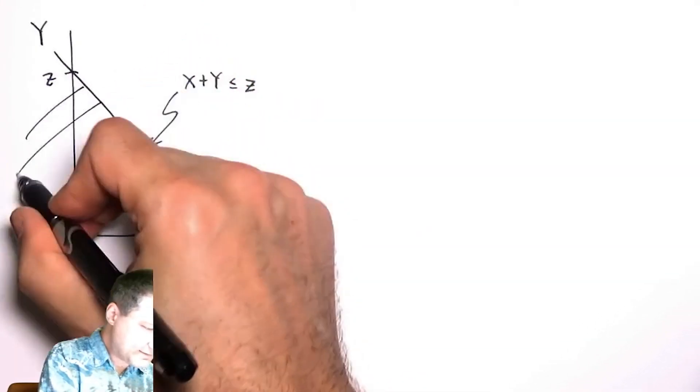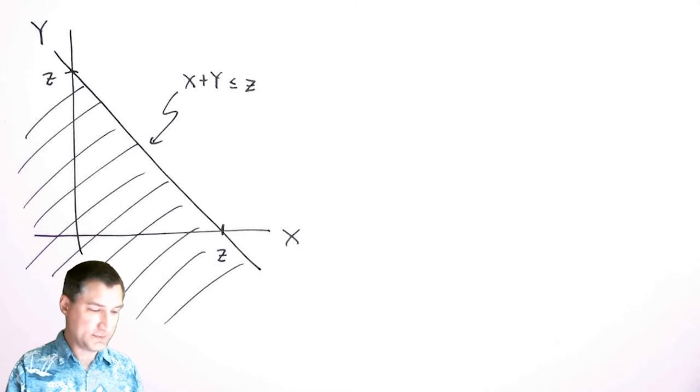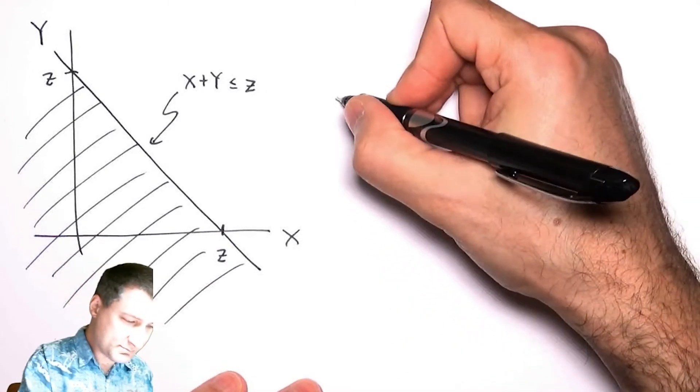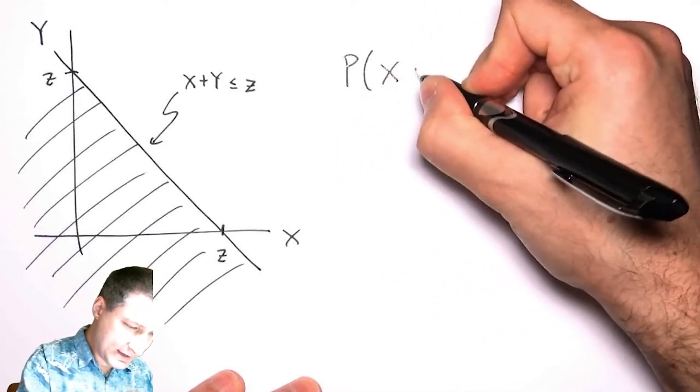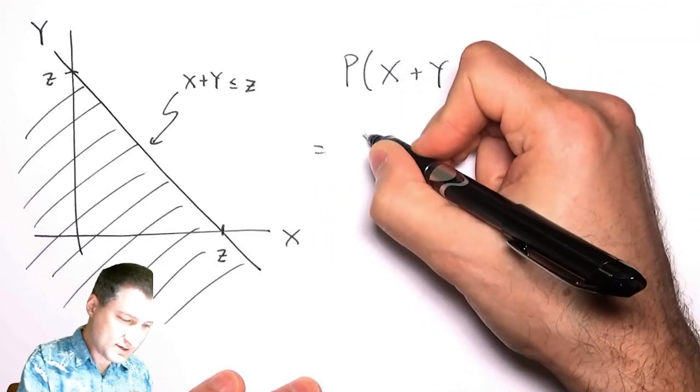It's like little z over here and little z over here, and I've got this event in the joint PDF. So now I can say, okay, this probability that X plus Y is less than or equal to little z is the integral.